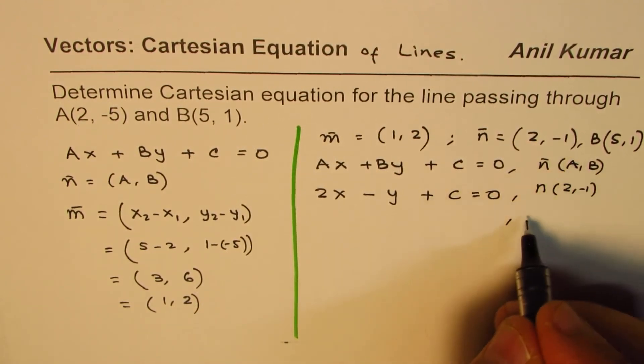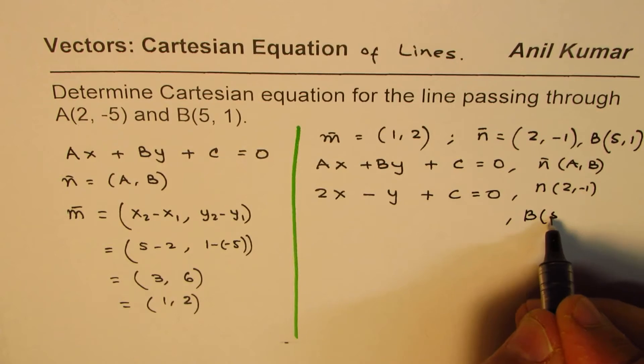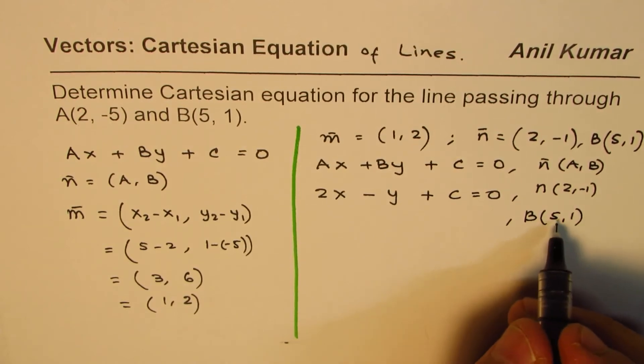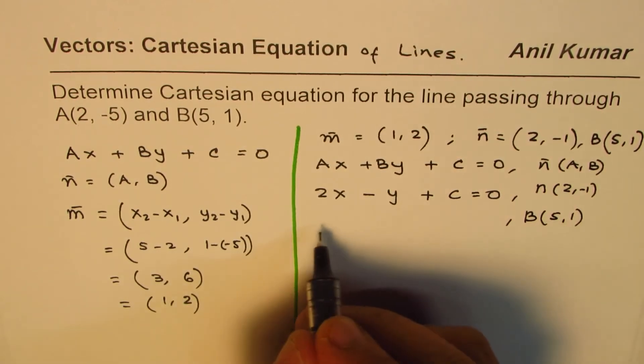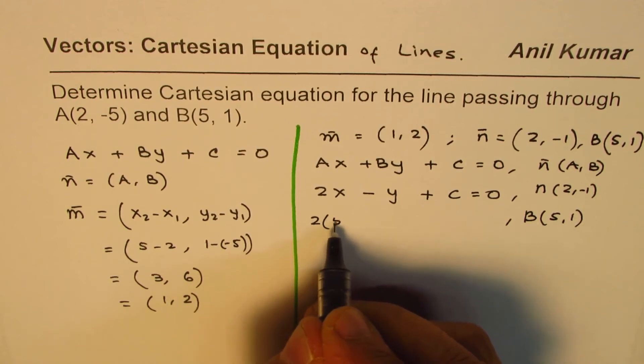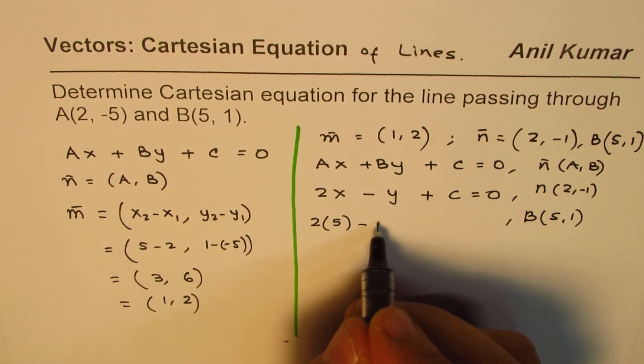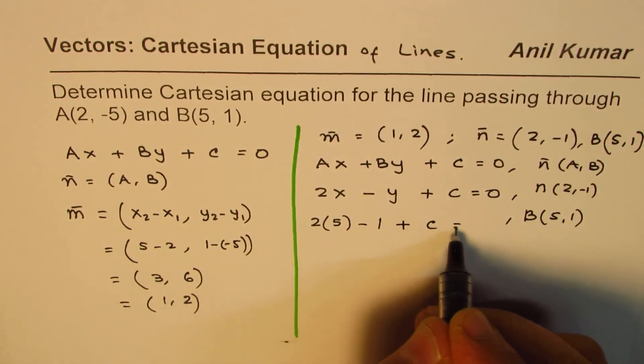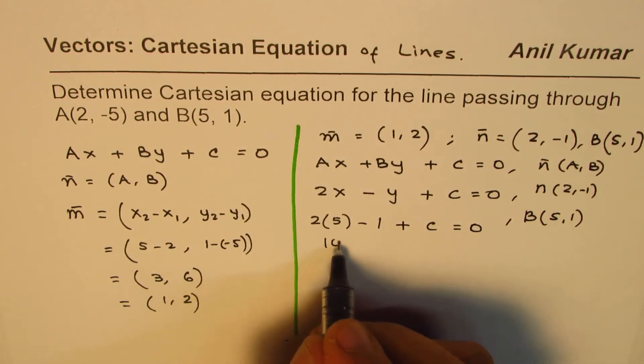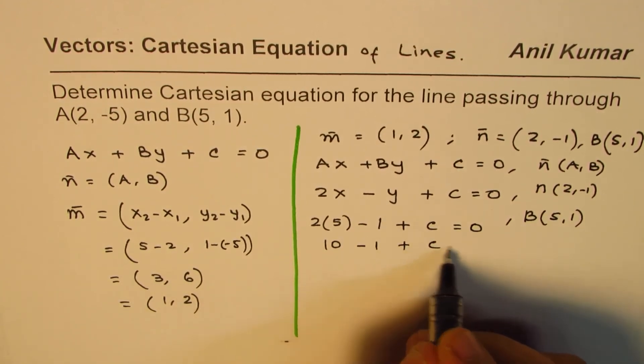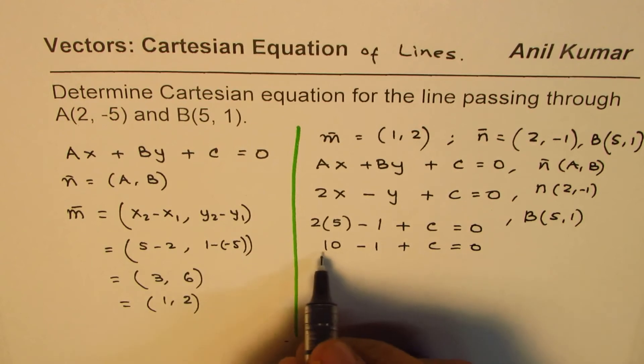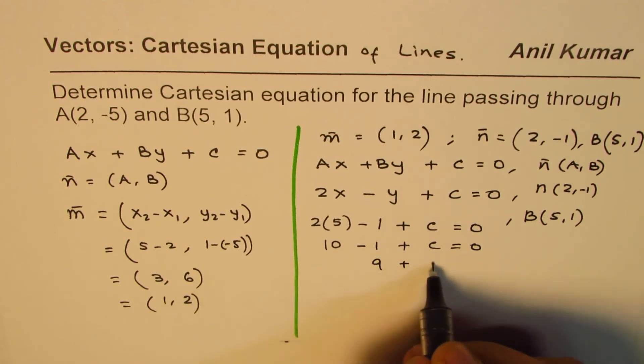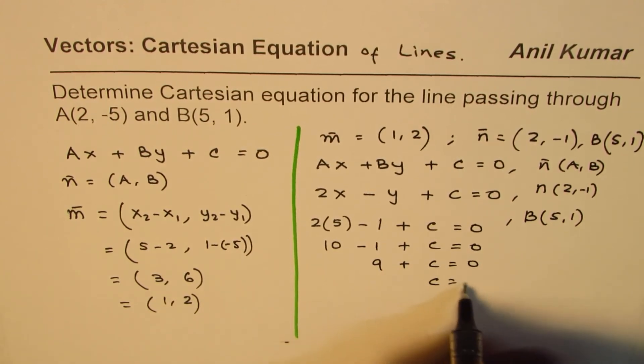Now we know that the point is B which is (5, 1). So let us substitute x and y values 5 and 1 respectively. 2 times 5 - 1 + C = 0. So that is 10 - 1 + C = 0. And that is 9 + C = 0 or C = -9.